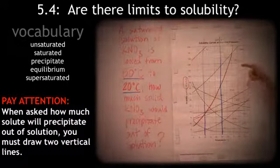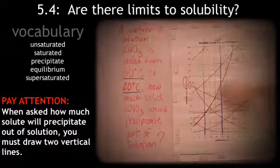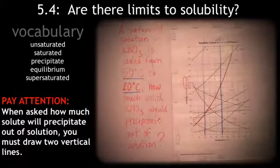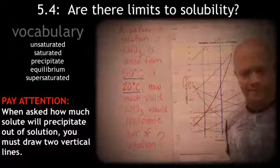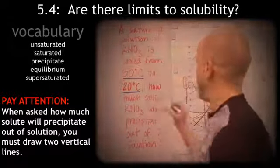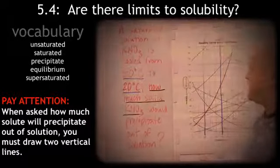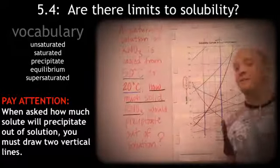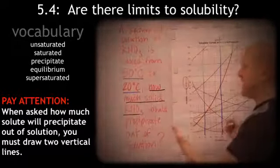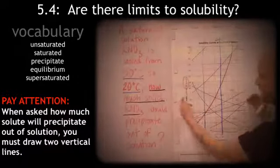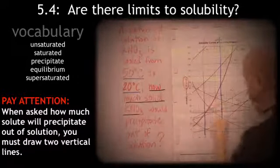So, we're dealing with 50 degrees and 20 degrees. Now, what this is asking is, how much solid KNO3 would precipitate out of solution? Well, how are we measuring the solid KNO3? We're using grams of solute.